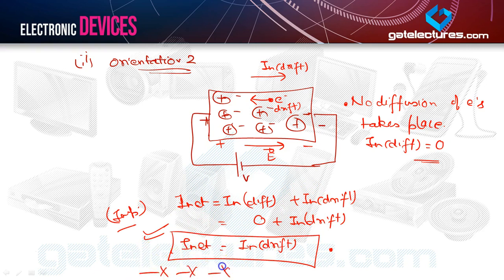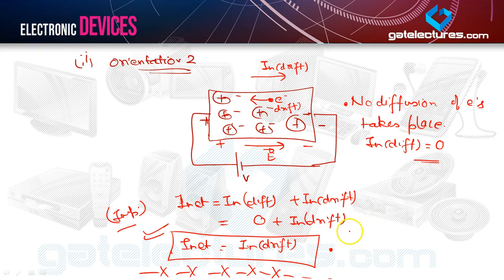In orientation 1, electrons both diffuse and drift, creating a net current not equal to zero. But in orientation 2, when we reverse the polarities, there is no diffusion — only drifting. Hence diffusion current is zero and net current equals drift current. I am ending this lecture here. Go through the lecture carefully and try to note down all the points I marked as important. This theory is important because most questions asked from the EDC subject are theory-based. Thank you very much.